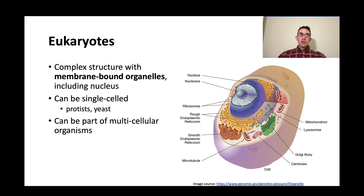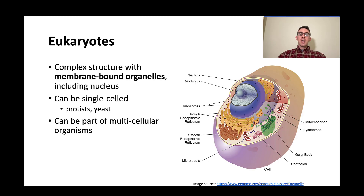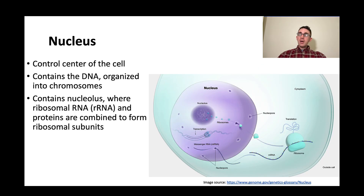Eukaryotes, on the other hand, are more complex. They have membrane-bound organelles, including the nucleus. Over on the right here is a picture of a bunch of the different types of organelles they have — they look a lot more complex than prokaryotic cells. They can be single-celled, like protists or yeast, but they can also be part of larger multicellular organisms like humans. One of these organelles is the nucleus — it's the control center of the cell. It contains the DNA organized into chromosomes, and it also contains the nucleolus, which is where ribosomal RNA and proteins are combined to form ribosomal subunits.